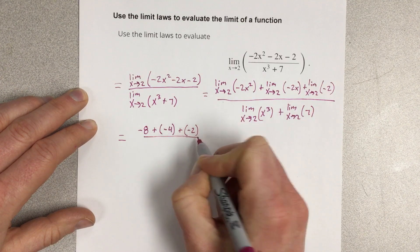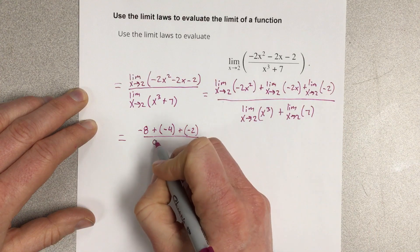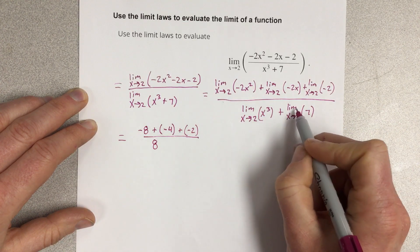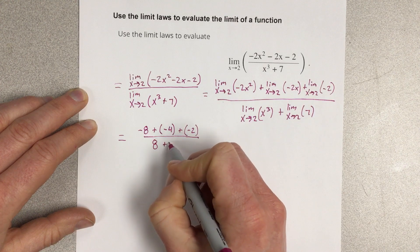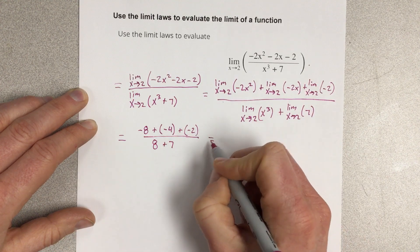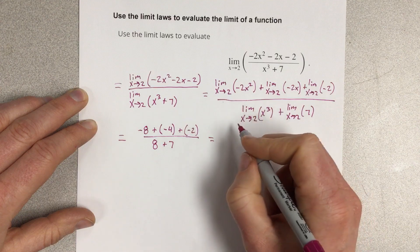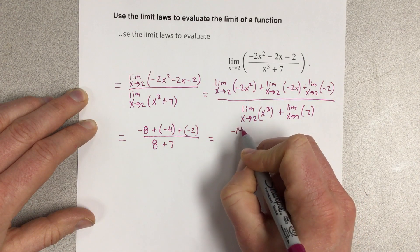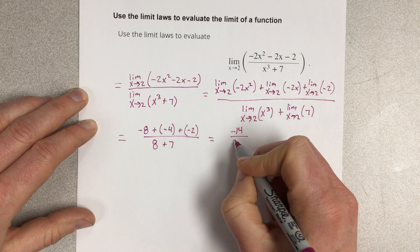All divided by 2 cubed, which is 8, and the limit as x approaches 2 for 7 is just 7. So negative 8 plus negative 4 plus negative 2 equals negative 14, and 8 plus 7 is 15.